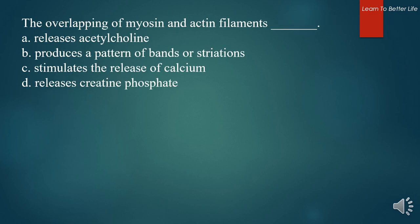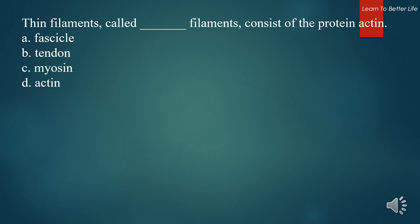The overlapping of myosin and actin filaments. A. Releases acetylcholine. B. Produces a pattern of bands or striations. C. Stimulates the release of calcium. D. Releases creatine phosphate. The answer is B. Produces a pattern of bands or striations. Thin filaments, called what filaments, consist of the protein actin? A. Fascicle. B. Tendon. C. Myosin. D. Actin. The answer is D. Actin.